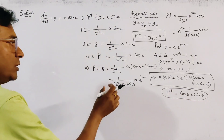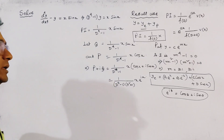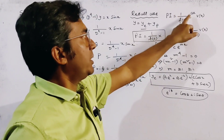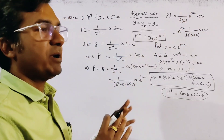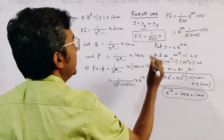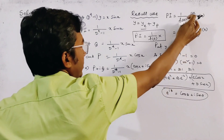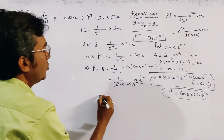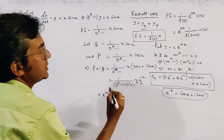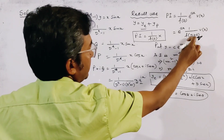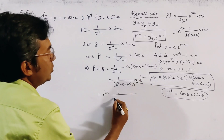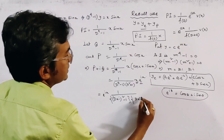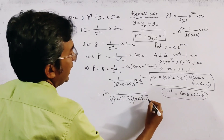We use the short rule: 1 over f(D) times e^(ax) times v(x) equals e^(ax) times 1 over f(D+a) times v(x). Here v(x) = x and a = i, so we replace D with D+i, getting 1 over [(D+i)^2 − 1]·[(D+i)^2 + 1] times x.